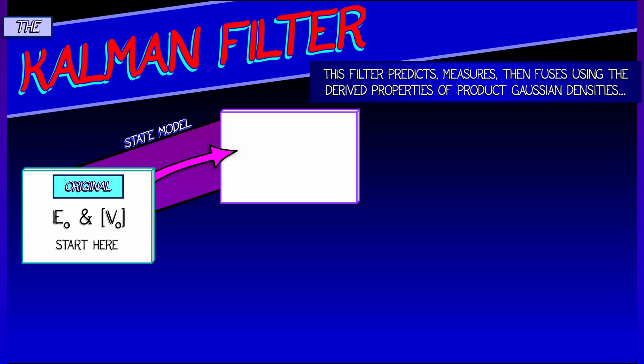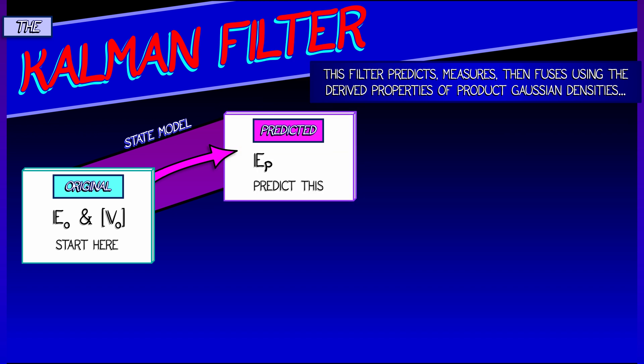We feed that into a state model. That state model, f, gives us an updated expectation, E p. D f, its derivative, gives us a predicted covariance matrix, V p.